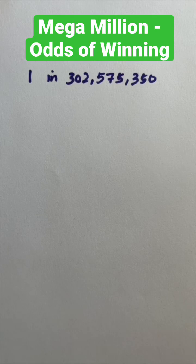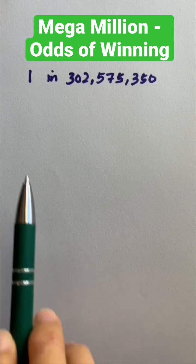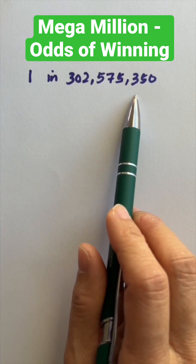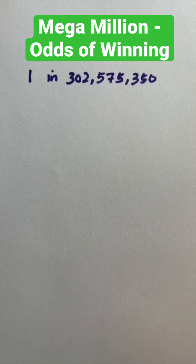The mega million is over a billion dollars. The odds of winning is 1 in 302,575,350. How do we get this number? Let's calculate this.